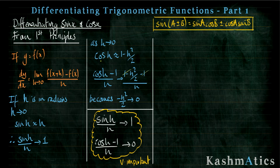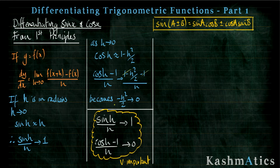Something similar happens for cos h, but you get a slightly different approximation: cos h is approximately one minus h squared over two. So cos h minus one over h — I can rewrite that as: one minus h squared over two, that's my cos h, minus one, all over h. The ones cancel, leaving minus h squared over two. Now because h is approaching zero, h squared will also be zero, so zero over two will be zero — so that approaches zero.